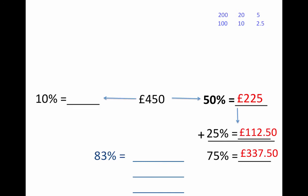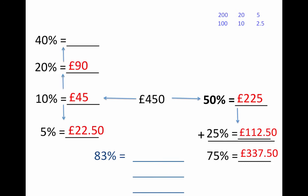And then on the other side, finding 10%, halving that to get 5%, doubling 10% to get 20%, and so on.